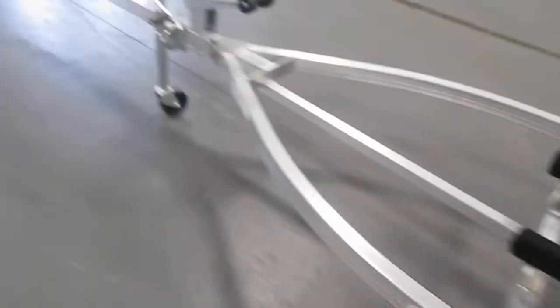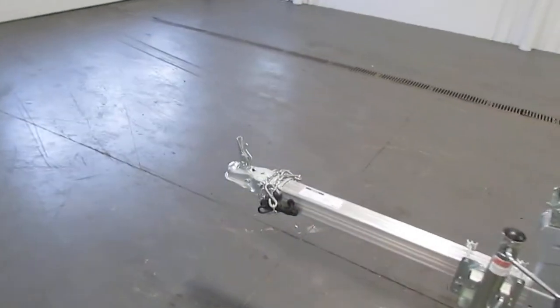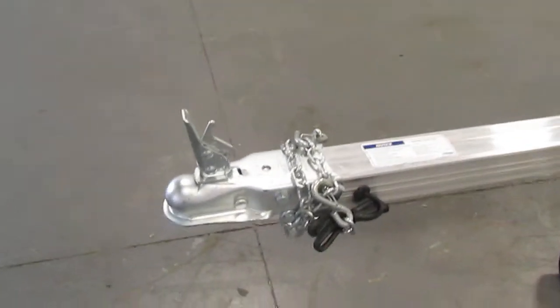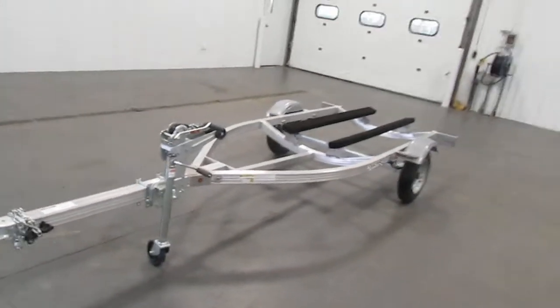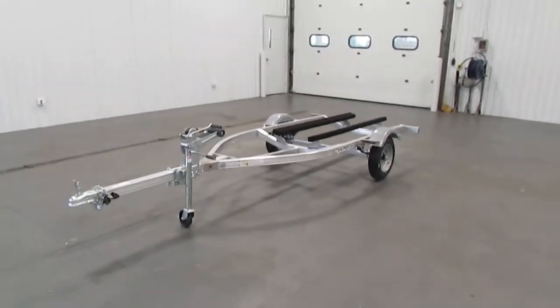You then also have the two inch trailer coupler that comes with the flat four trailer light connector and the safety chains and this trailer weighs 240 pounds.